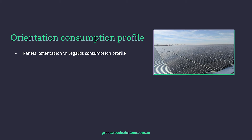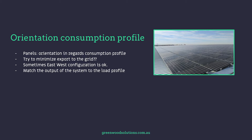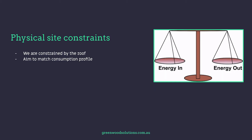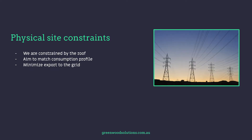Panels are orientated in regards to the consumption profile on site. What we try to do as designers is minimise the export to the grid in most cases. Sometimes an east-west configuration is okay compared to a north. What we ultimately want to do is match the output of the system to the site load profile, but we are constrained by the physicality of the site, the roof and the state of the roof.